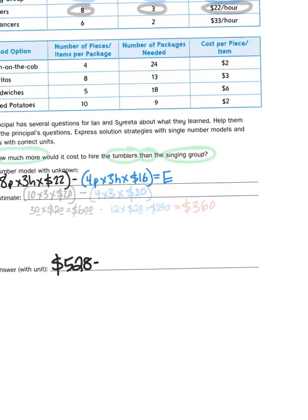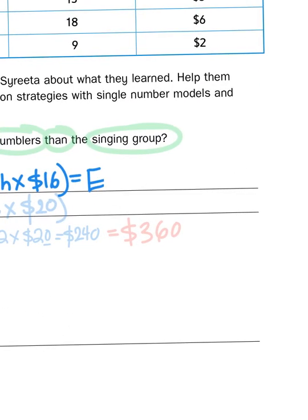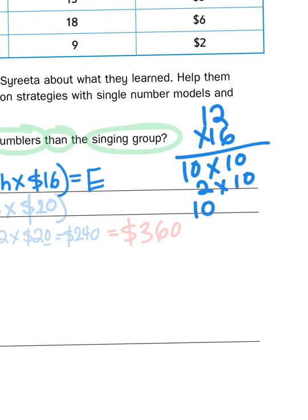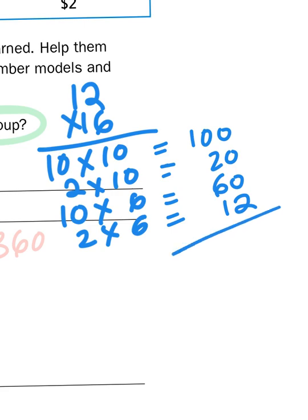Now I'm going to subtract 4 times 3 times 16. Well, 4 times 3 again is 12. So really what I'm multiplying here is 12 times 16. And again, if I employ partial products, I'm multiplying 10 times 10, 2 times 10, 10 times 6, and 2 times 6. And again, I need to come up with all my little products, my partial products. 10 times 10 is 100, 2 times 10 is 20, 10 times 6 is 60, 2 times 6 is 12. 100 plus 20 plus 60 plus 12. That gives me a total of $192.